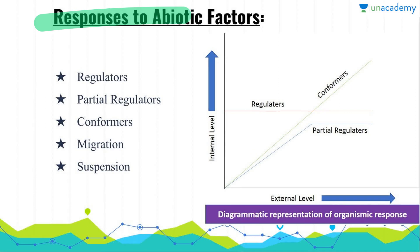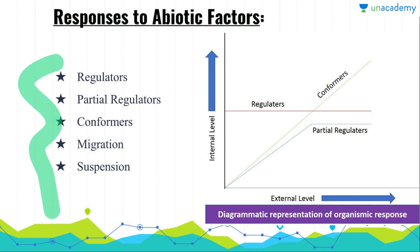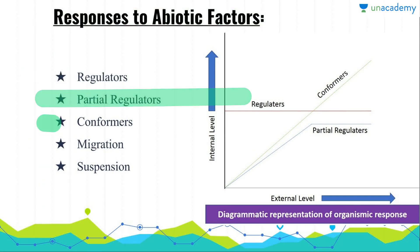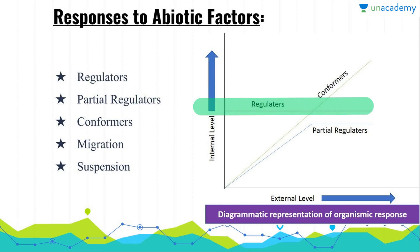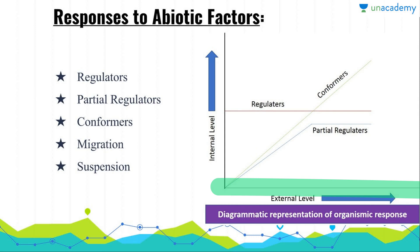Now, what are the responses of organisms to these abiotic factors? There are five kinds of responses: regulator, partial regulator, conformer, migration, and suspension. In the case of a regulator, the internal level of the organism does not change according to the external environment. Take the example of humans — our internal body temperature remains at 97 or 98 degrees Fahrenheit in both summer and winter.